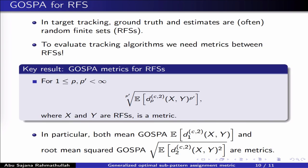Finally, I would like to mention a separate and additional contribution presented in the GASPA paper. Until now we've discussed metrics between sets of vectors, but when we evaluate the performance of tracking algorithms, we often view both the ground truth and the estimates as random variables. What we actually want is therefore metrics on stochastic variables, and in our setting we want metrics on random finite sets. In the paper we presented a fairly general result that shows how one can use GASPA to obtain metrics on random finite sets.